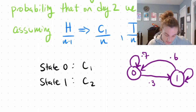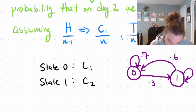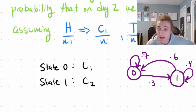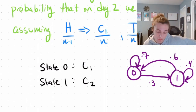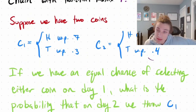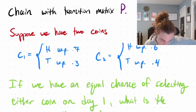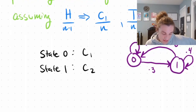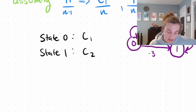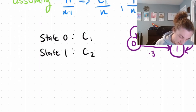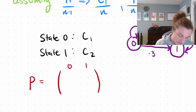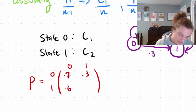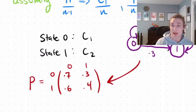The probability of staying in state 1 is 0.4 — that's the probability of throwing tails given you're already in state 1. Using this diagram, we can construct a transition matrix P, which tells us how we transition from state to state. We have state 0 to state 0: 0.7, state 0 to state 1: 0.3, state 1 to state 0: 0.6, and state 1 to state 1: 0.4, just reading off the diagram.